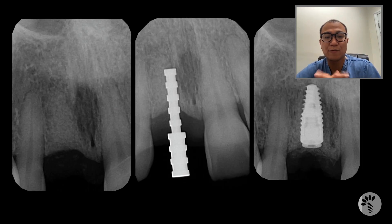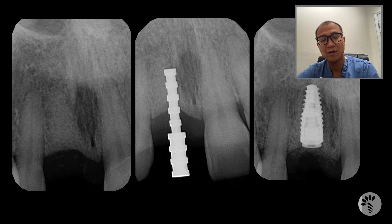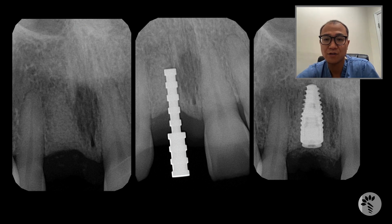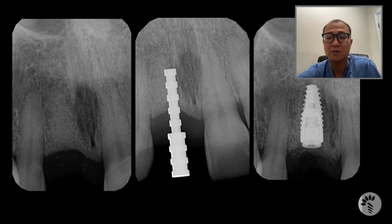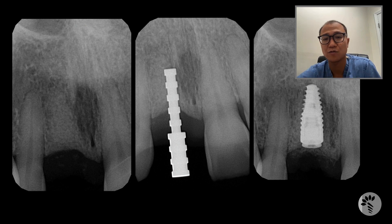And here are the radiographs: the preoperative radiograph, the intraoperative radiograph with a guide pin, the placement of the dental implant with a cover screw, and the implant further submerged. We're going to wait about three months for osseous healing before doing the second-stage surgery to expose this implant. I hope you enjoyed my short case synopsis of Caitlin. Take care.